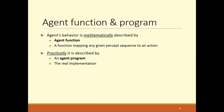An agent program is the real implementation of an agent function — a mapping of any given percept sequence to an action. Despite the agent function being able to hold all history of percepts, an agent program can only take one current input at a time, because nothing else is available at that moment.